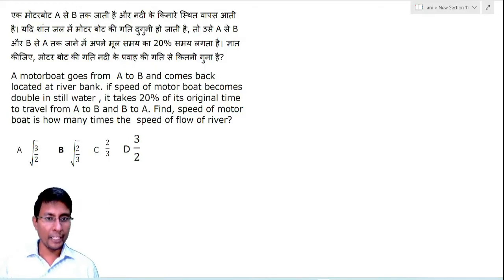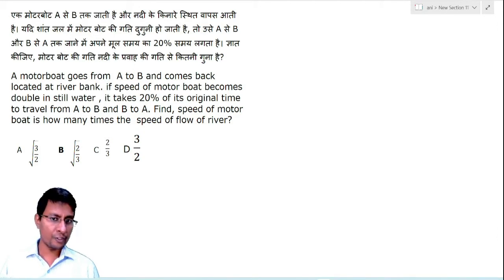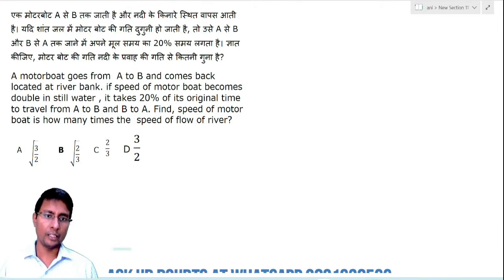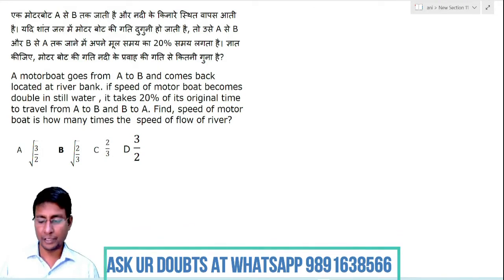A motorboat goes from A to B and comes back, located at a river bank. If the speed of the motorboat becomes double in still water, it takes 20% of its original time to travel from A to B and back. Find how many times the speed of the motorboat is compared to the speed of flow of the river.